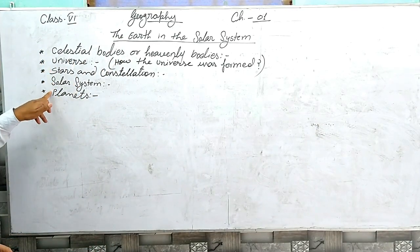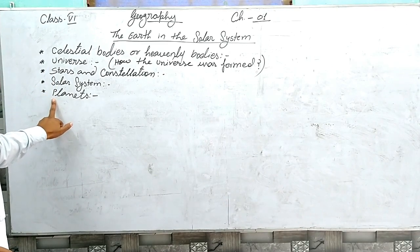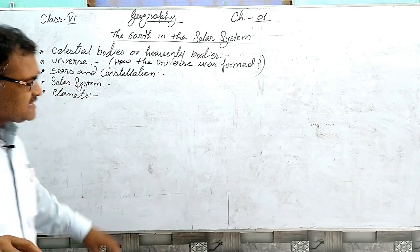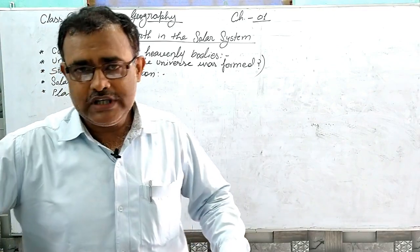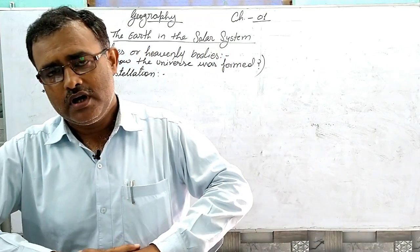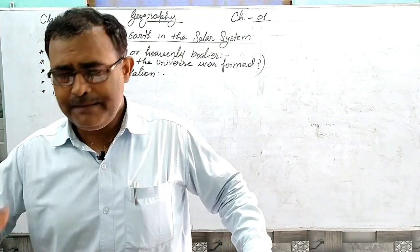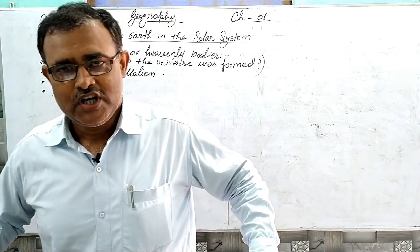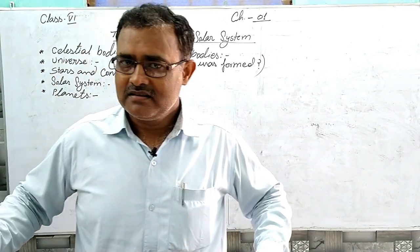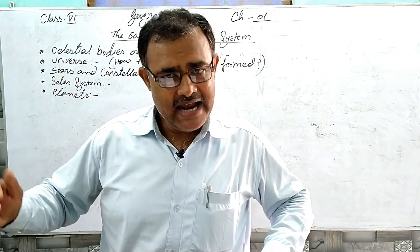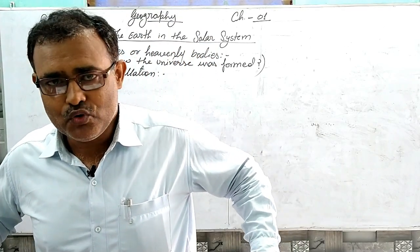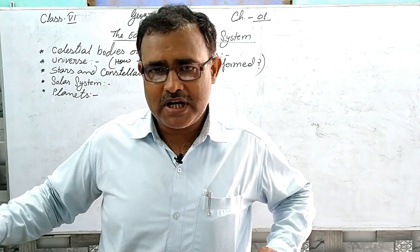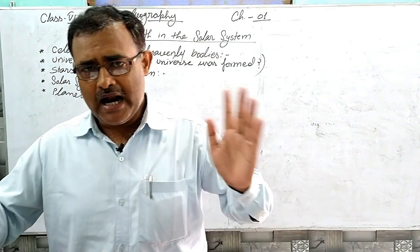We will learn all the important topics in this chapter. There are many objects we can see in the sky. During the day, we can see the sun, and at night we can see the moon and stars.